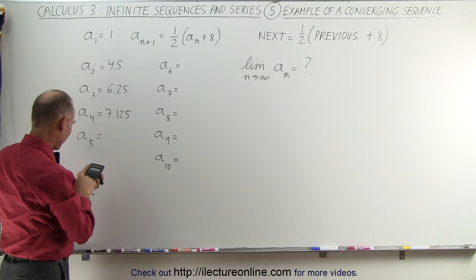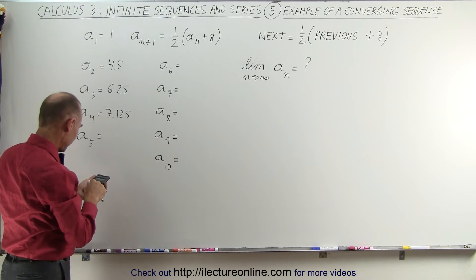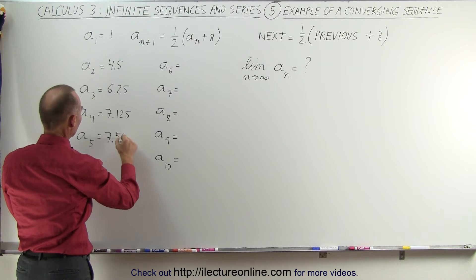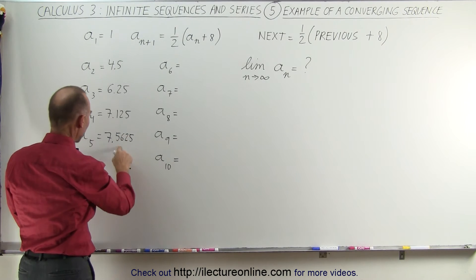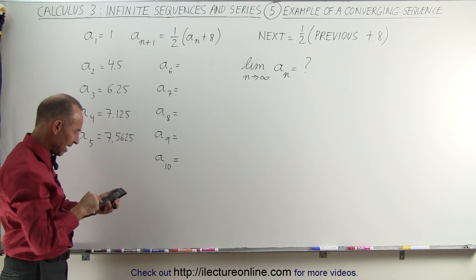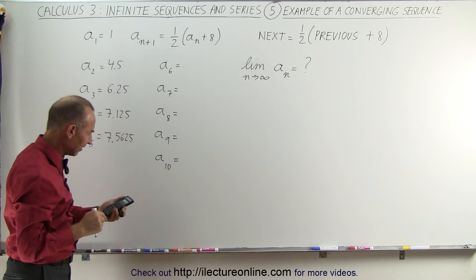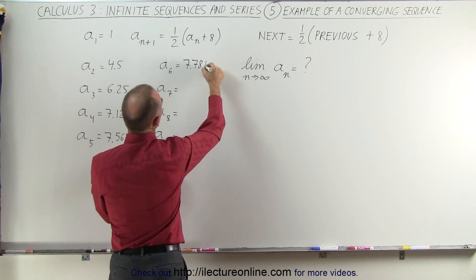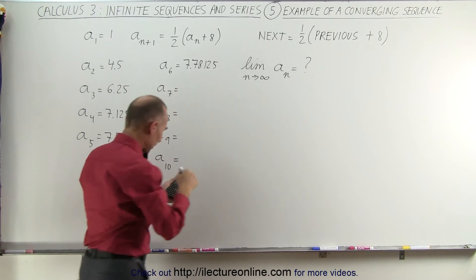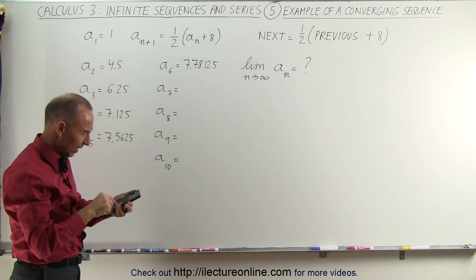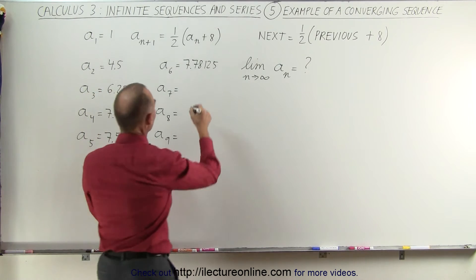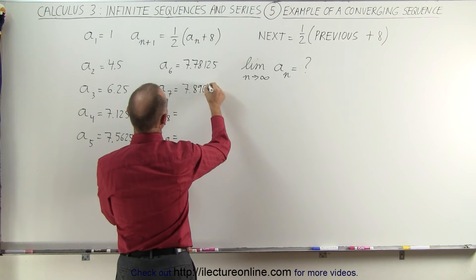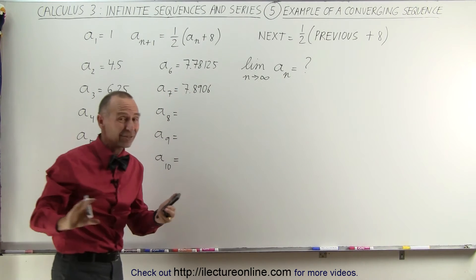Seven plus eight would be fifteen point one two five divided by two equals 7.5625. We add eight to that and divide by two and we get 7.78125, and then we add eight to that, divide by two, and we get 7.890625. I'm going to leave off some of those extra decimal places.